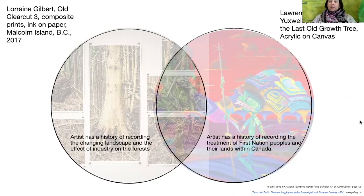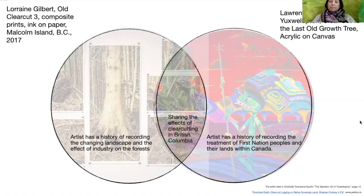Whereas Yuxweluptun has a history of recording the treatment of First Nations people and the lands within Canada. He does focus on the land, as does Gilbert, but it's not just the land — this piece is very much tied to the land and also connected to the political issues of the First Nations people. So they're both showing the effects of clear cutting in British Columbia, but one is more focused on one side, and the other touches on both.